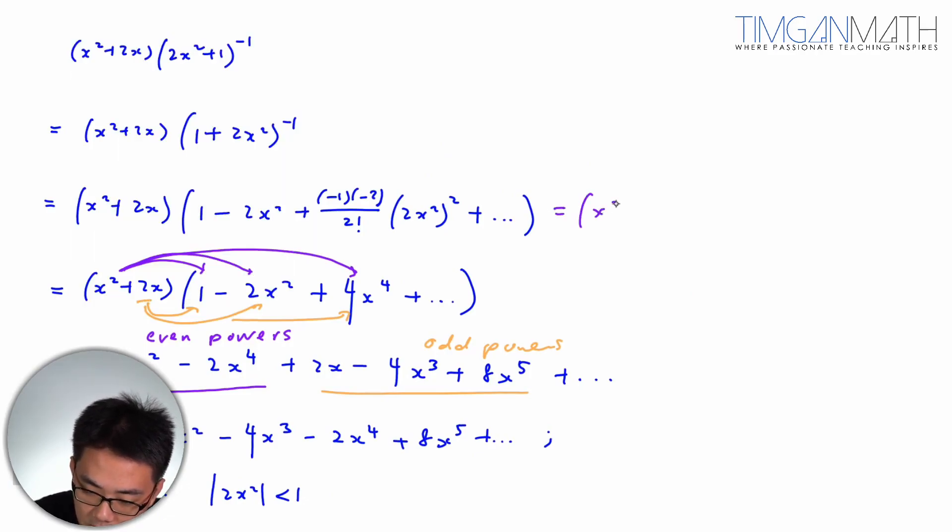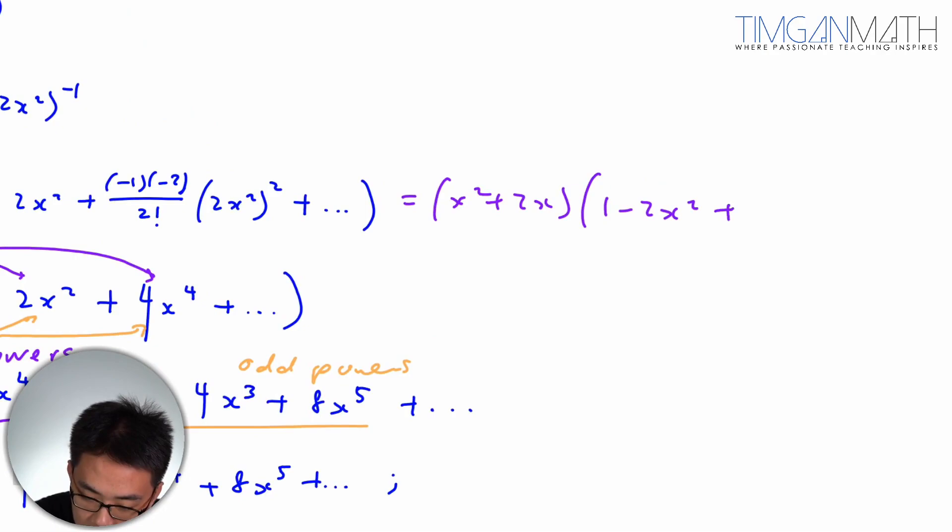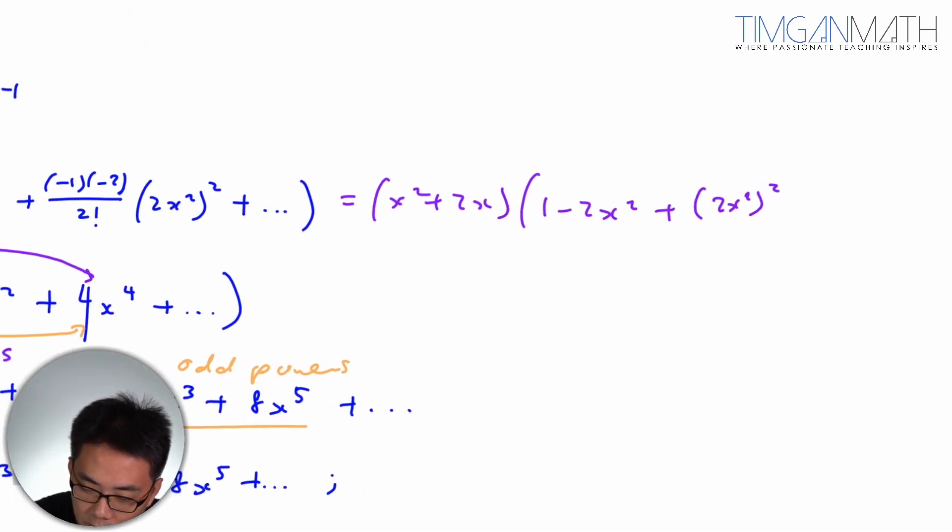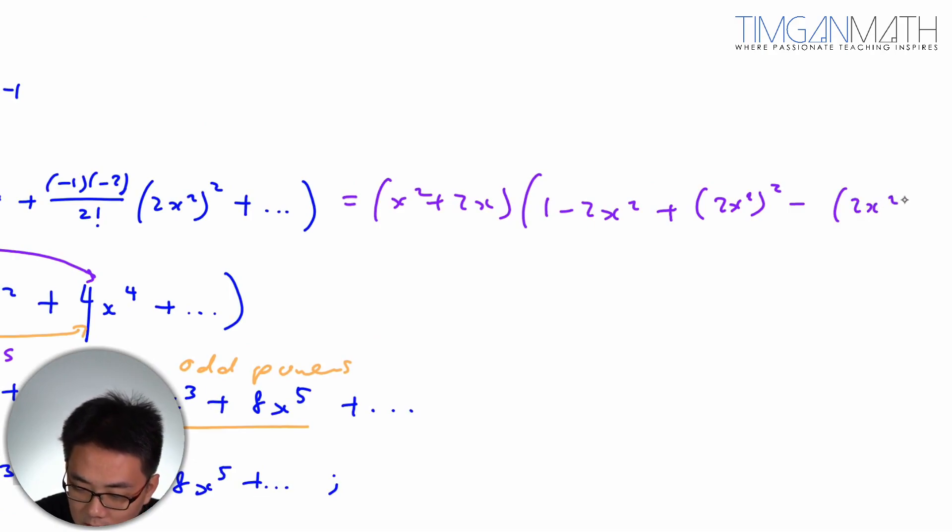And this will be (1 - 2x^2), then this will be plus (2x^2)^2, then after we should have minus (2x^2)^3, this is 1, and so on.